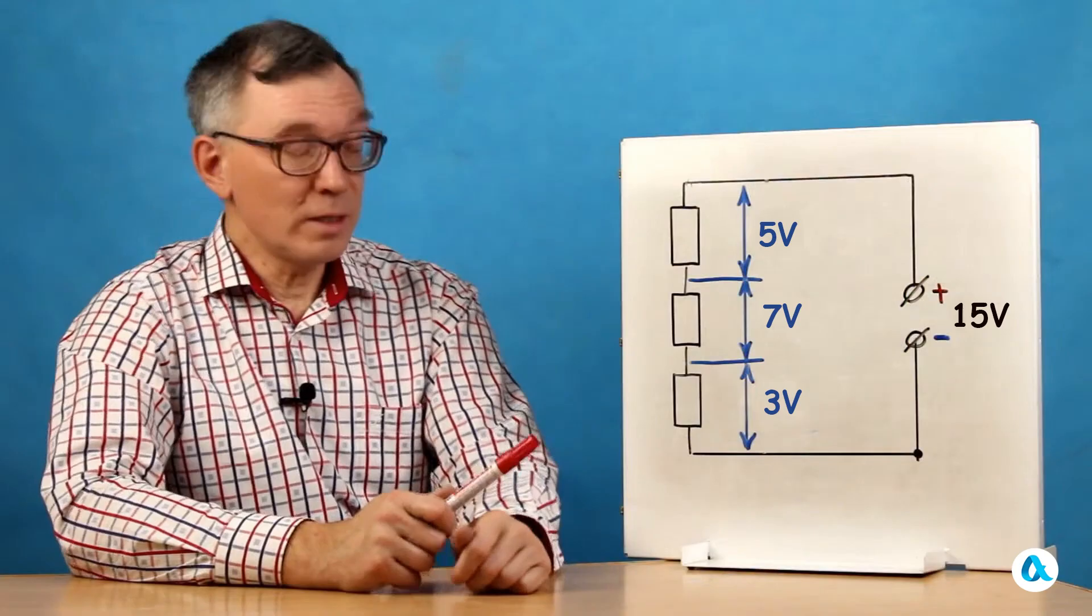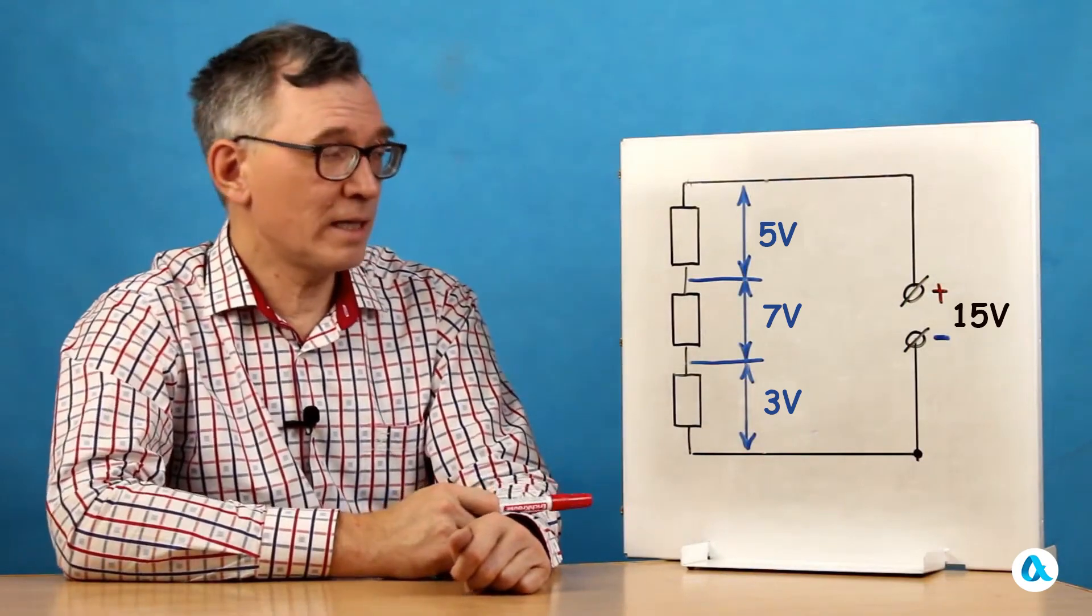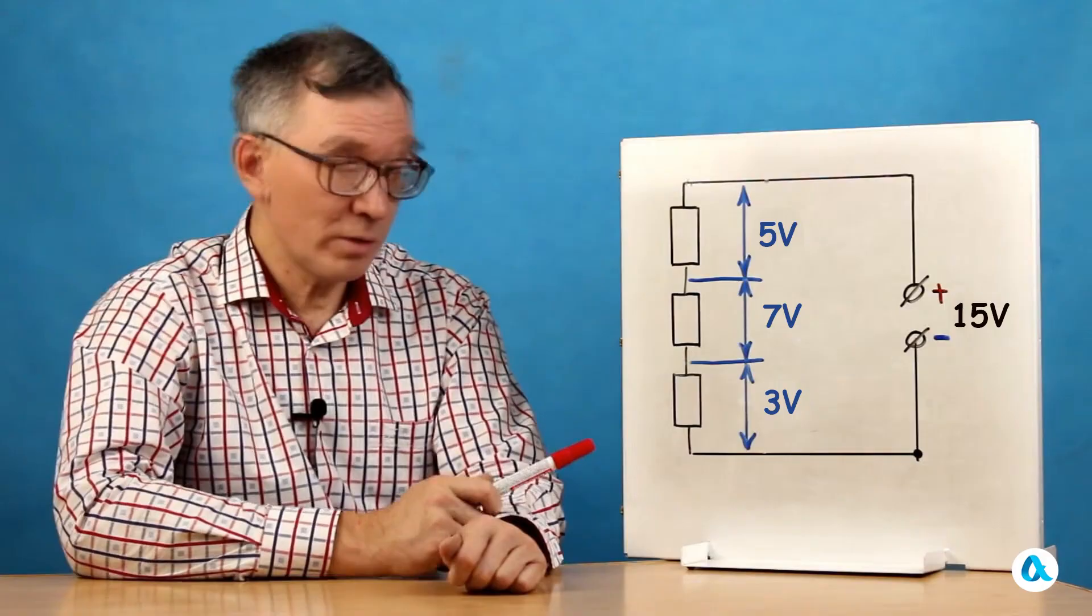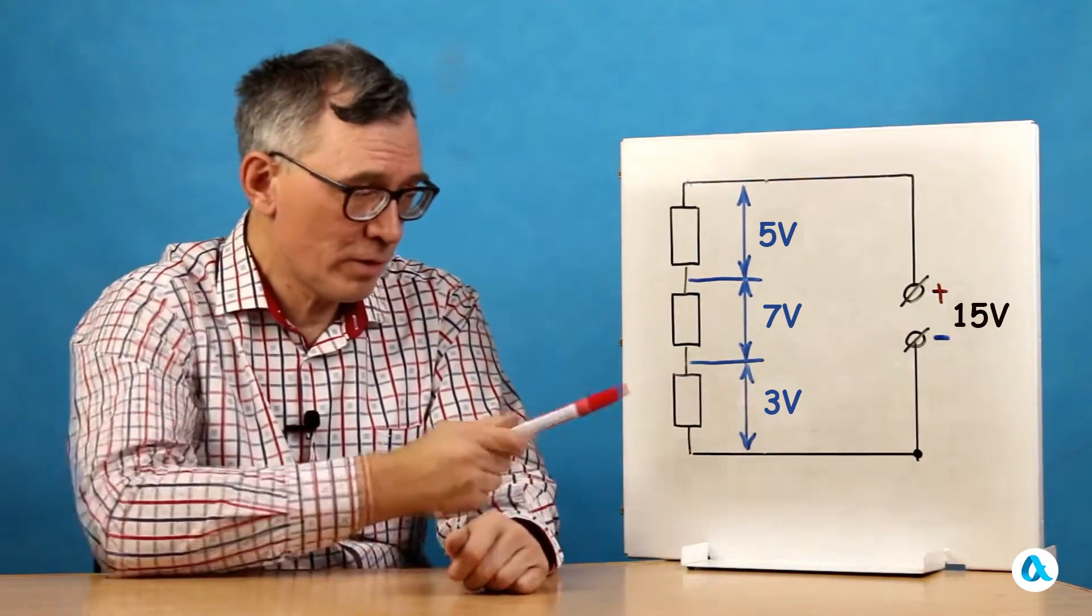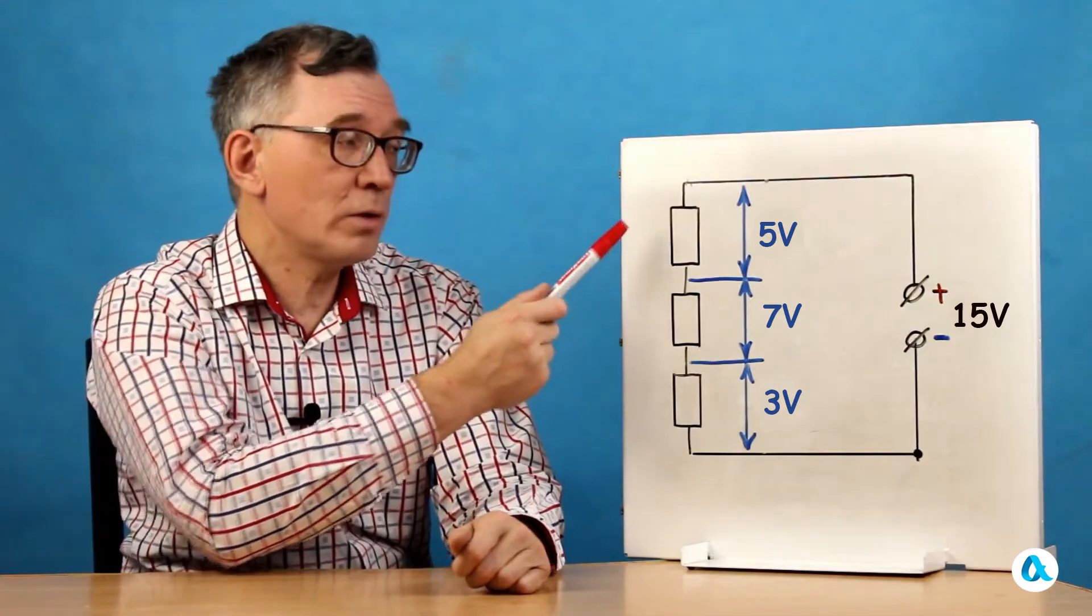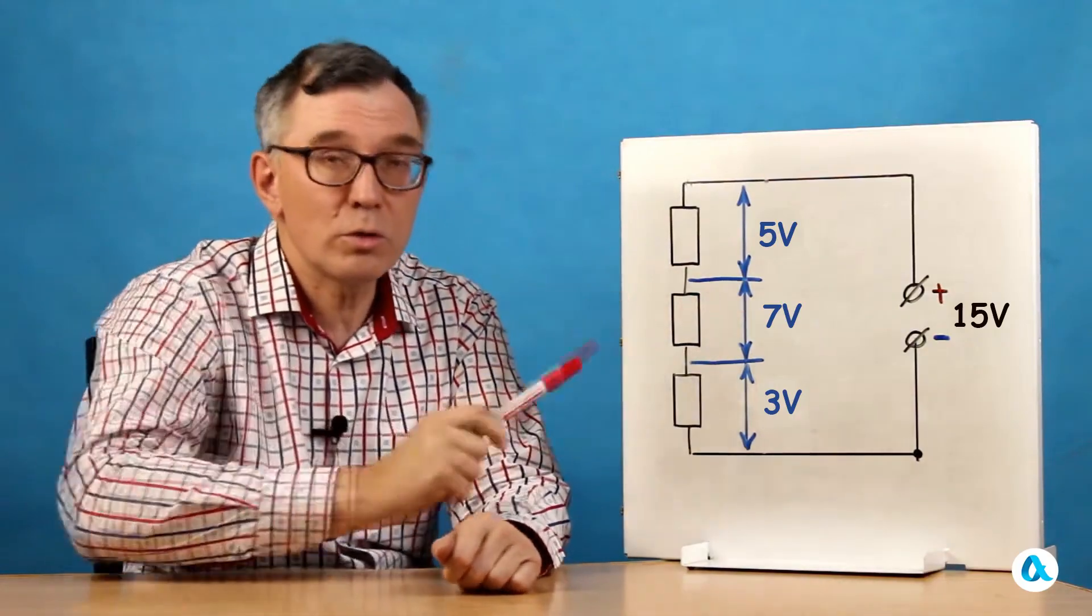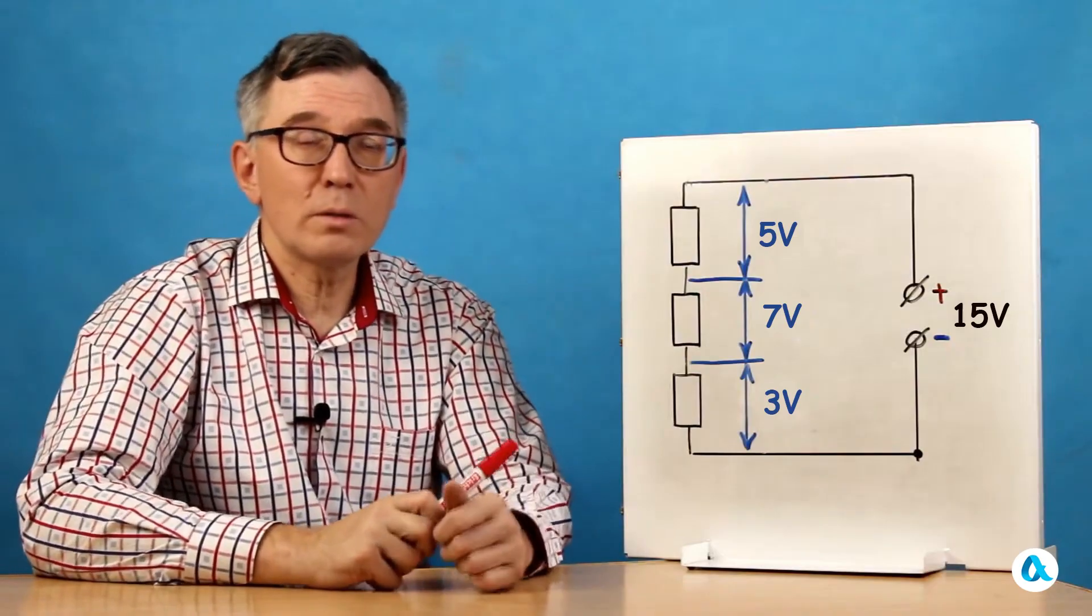Now, let's consider a circuit that consists of 3 resistors connected in series. And let's say this circuit is supplied with a voltage of 15 volts from a power source. So, the voltage drop across the first resistor is 3 volts, across the second it's 7 volts, and across the third it's 5 volts, totaling 15 volts from the power source.